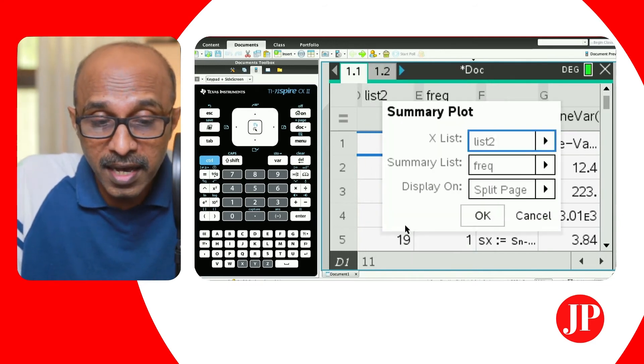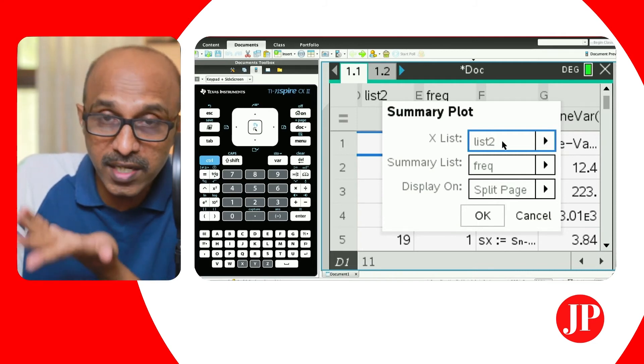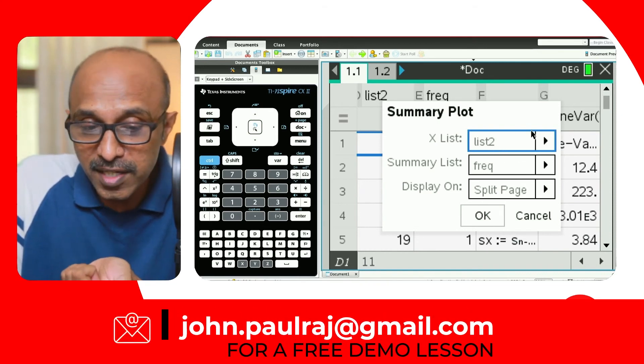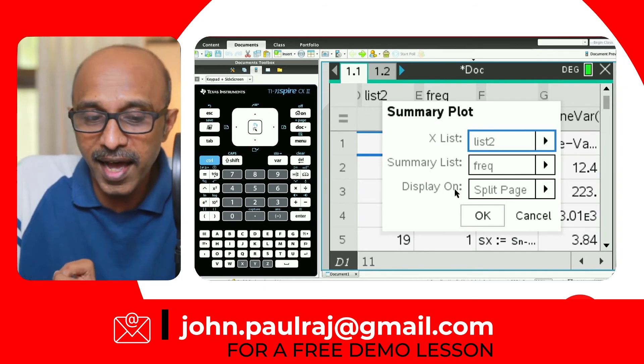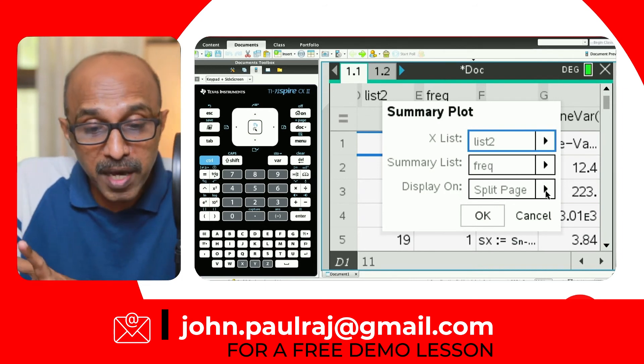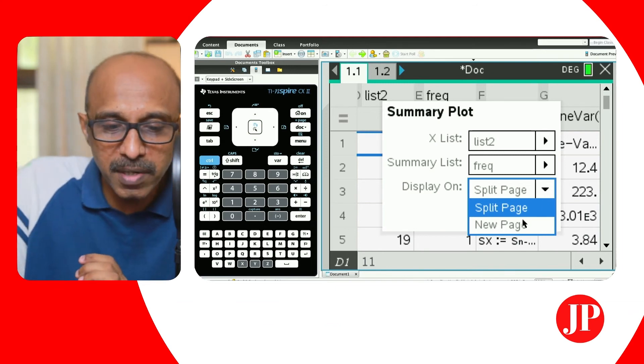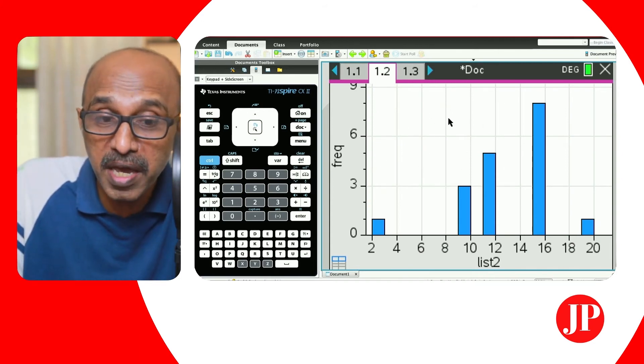And watch what's going to happen when I hit summary plot. When I hit summary plot, it asked me this question, X lists, and it's automatically recognizing that we are on list two. So we say, yes, we want the data coming from list two. And yes, the summary of this data from list two, which has a frequency coming from a list called FREQ, and the display can be on a split page or it can be on a new page. It might be too crammed if you do split page, but then you can say a new page and watch what's going to happen. The calculator is going to insert a new page.